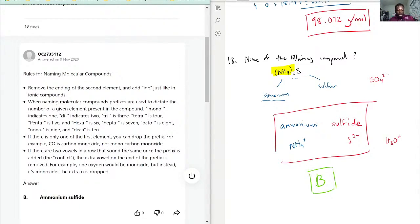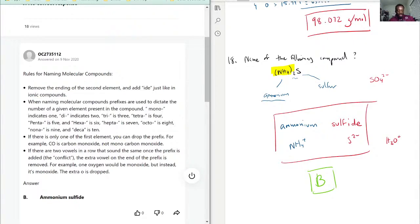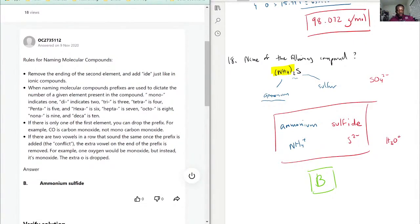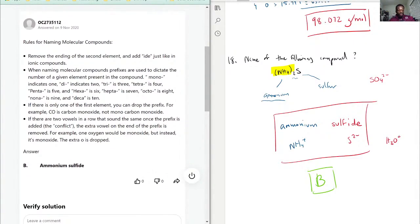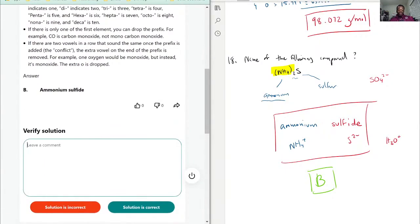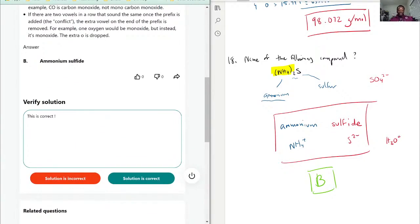You will see that you want to be able to include the mono, di, and everything else, but you would not do that for ammonium. With that being said, ammonium sulfide is the answer. You would not see di-ammonium sulfide ever, because this is one of the exceptions to where it almost follows the naming rules of an ionic compound, even though it's a molecular covalent compound.